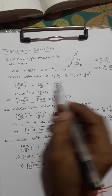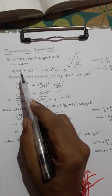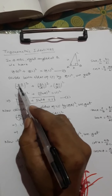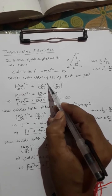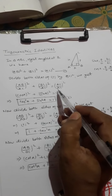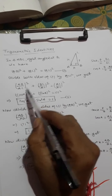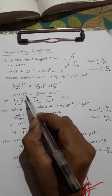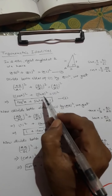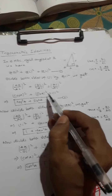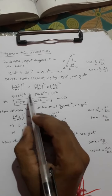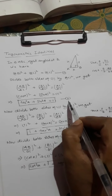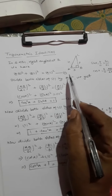Dividing both sides of equation one by AC², we get (AB/AC)² + (BC/AC)² = AC²/AC². The right side cancels to 1. Now AB upon AC equals cos A, and BC upon AC equals sin A. So we get cos²a + sin²a = 1. Our first identity is proved.